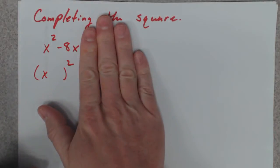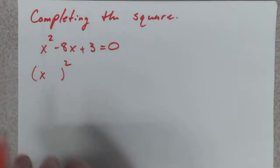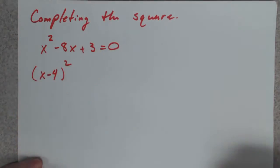Well, remember the shortcut. You double that number to get this guy. So what's half a negative 8? It would be negative 4. Right?